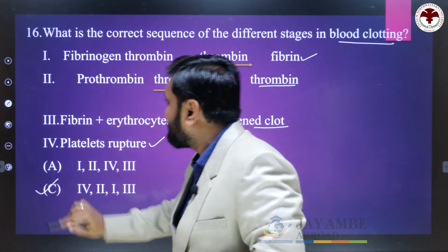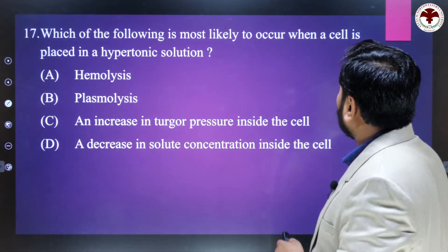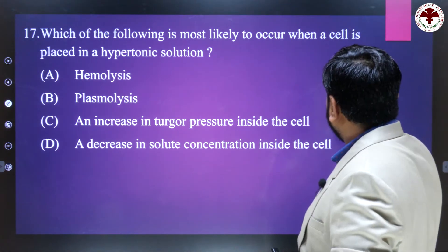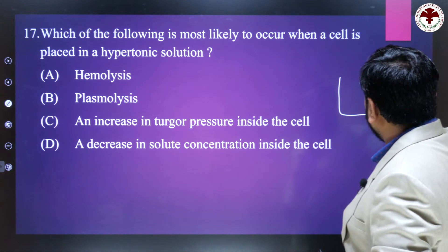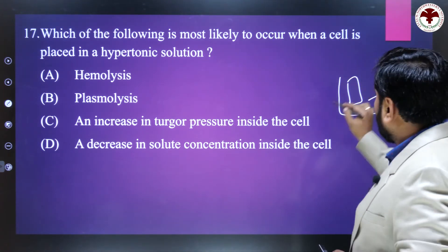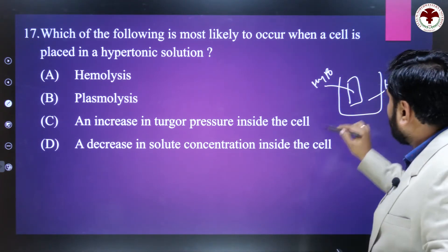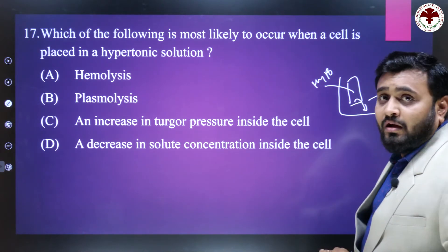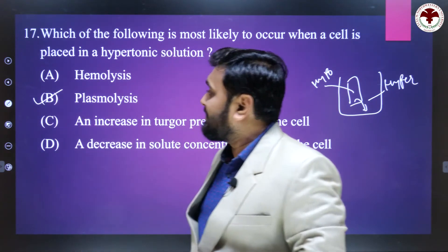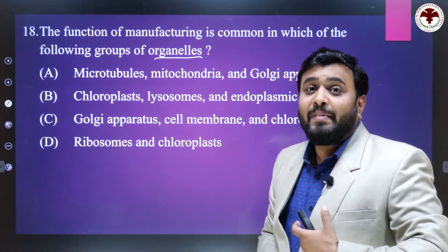Which of the following is most likely to occur when a cell is placed in a hypertonic solution? Inside a beaker with hypertonic solution, a plant cell is placed — the cell interior is hypotonic. What happens is water comes out of the cell and the cell shrinks. That process is known as plasmolysis.